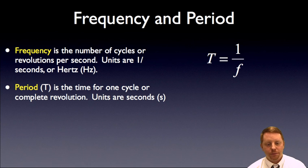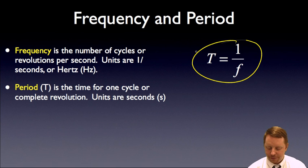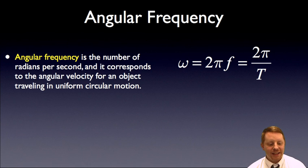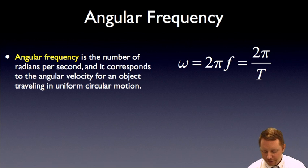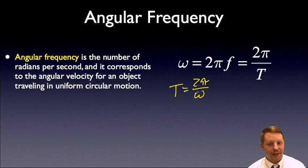Frequency is the number of cycles per second; its units are one over seconds, called hertz. Period is the time for one complete cycle, in seconds, and you can relate them with T equals one over f, or f equals one over T. Angular frequency omega is the number of radians per second — corresponding to angular velocity in uniform circular motion — and omega equals two pi times frequency, or two pi over the period. So the period equals two pi over omega.